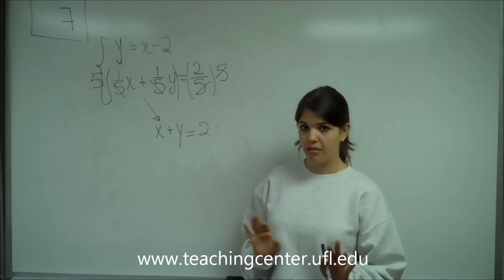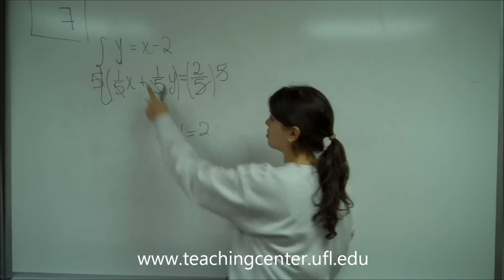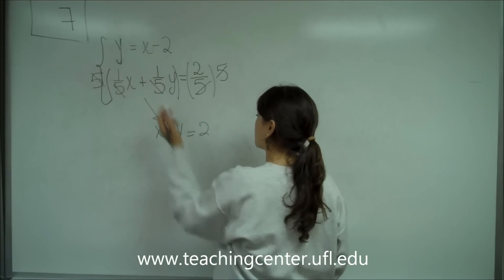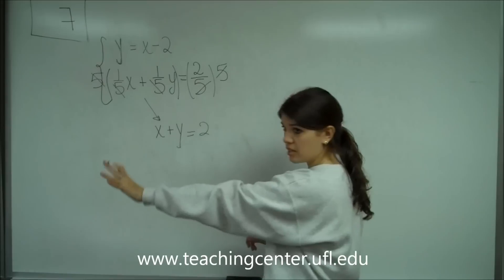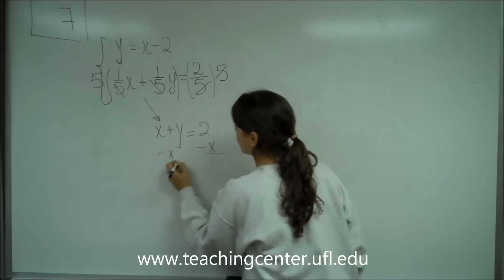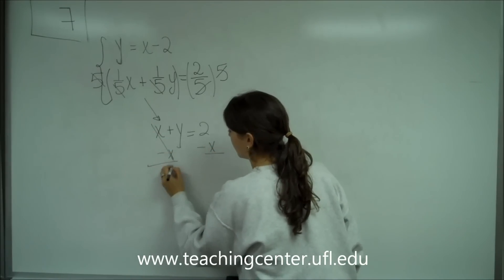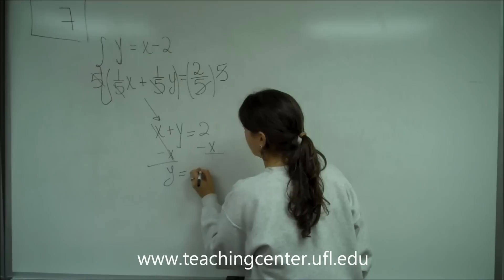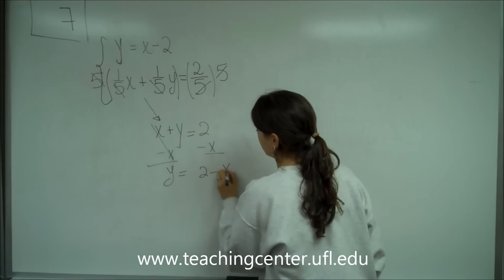But we have to just make sure that they are the same. So to do that, let's make this look similar to that. So let's make this have a y on one side and everything else on the other side. So I'm going to subtract x from both sides to cancel it. And I'm going to get y equals 2 minus x.